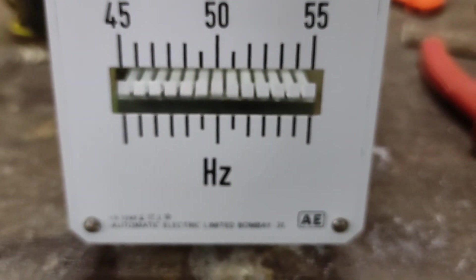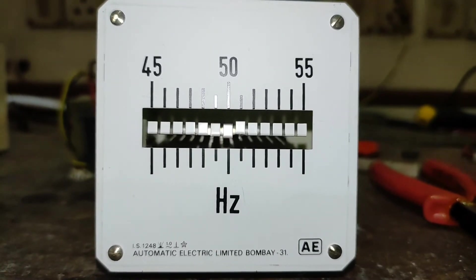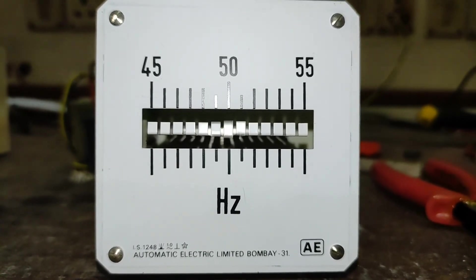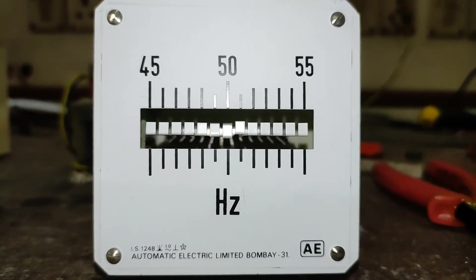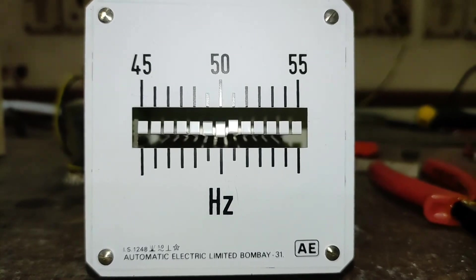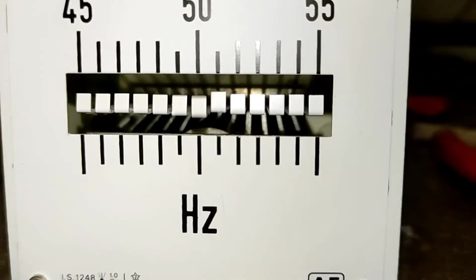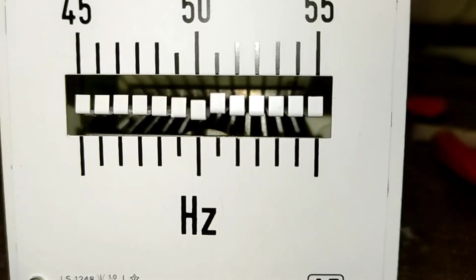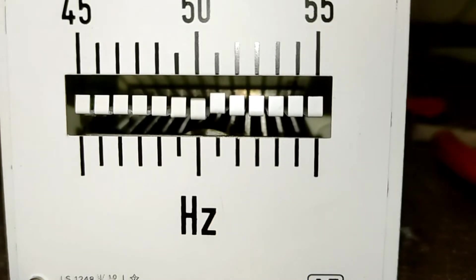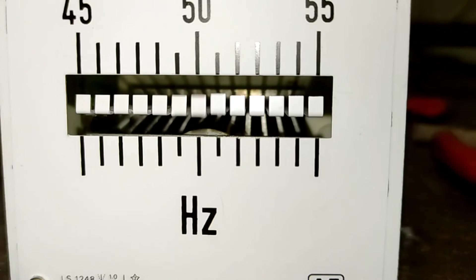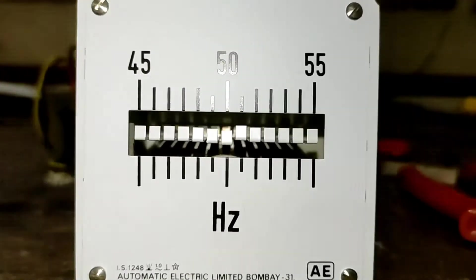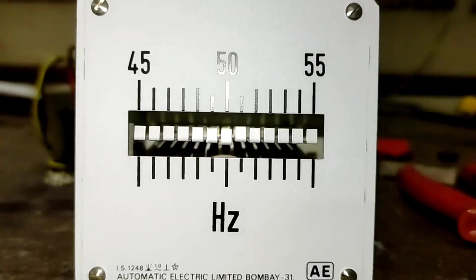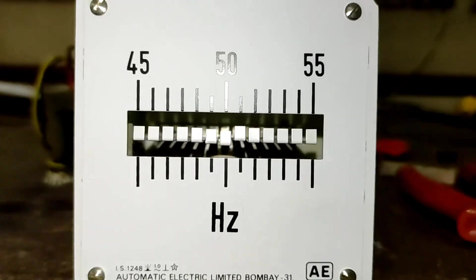Now let's move to the slow motion footage. Here's an up-close view. I really wish I had one of these units, but I have to return this one. You can see in slow motion how beautifully it vibrates. It's not just the 50 hertz marker vibrating—the markers on the sides are also vibrating slightly.